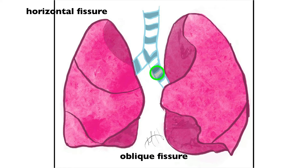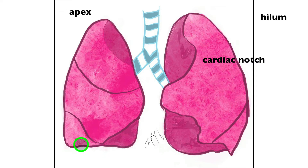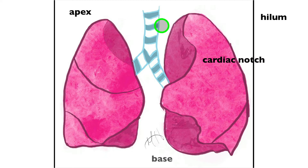The bronchi, blood vessels, lymphatic vessels, and nerves enter and leave the lungs via an indentation known as the hilum. Right around here is the cardiac notch, providing room for the heart — specifically the apex of the heart. The superior aspect of the lungs is known as the apex of the lungs, and the inferior aspect that sits directly on the diaphragm is known as the base of the lungs, which is counter to the heart — the inferior-most aspect of the heart is the apex, and the top where the great vessels come off is the base.